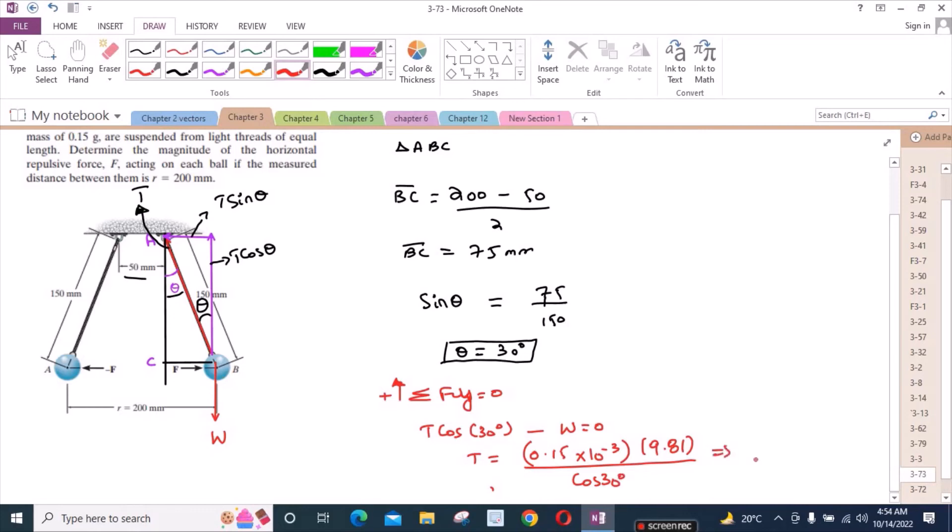From here, T is equal to 1.7 times 10 to the negative 3 newtons.